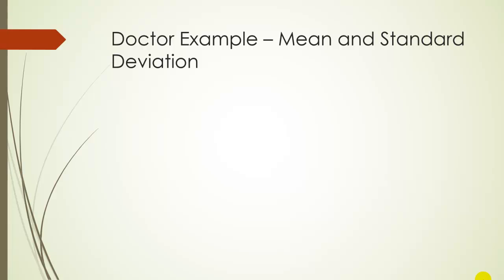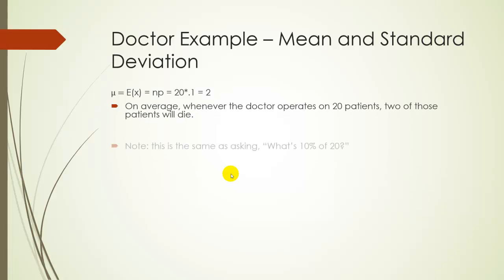So going back to this surgeon or doctor example, let's find the mean and standard deviation. So the mean is just going to be n times p, so that's 20 times 0.1, which is 2. As I mentioned, this is actually a formula that you're familiar with. You just may not have seen the formula for it. So this is really the same thing as saying what's 10% of 20 because we expect 10% of those 20 people to die. Well, if you're doing a percentage of a number, you just multiply. So that's all we're talking about. What's 10% of 20? Well, that would be 2.